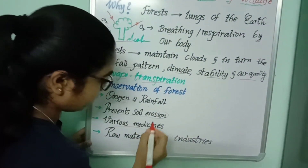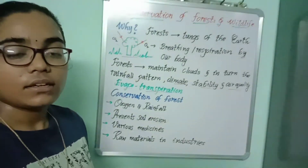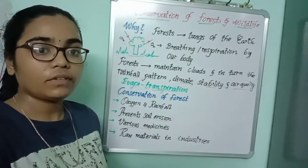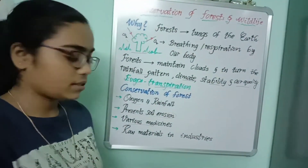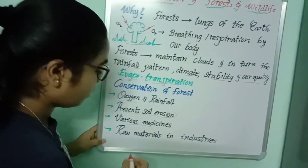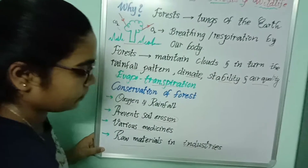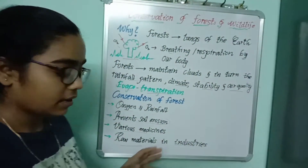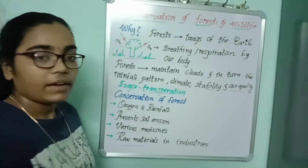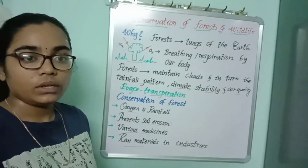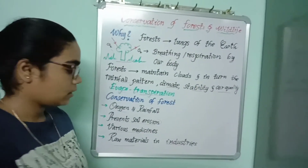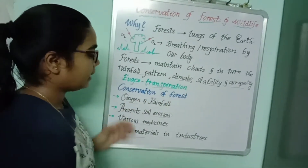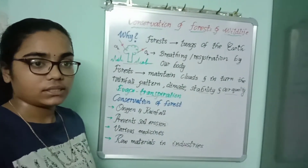Forests also provide various medicines — such as neem, mint, and lemon — which are helpful for preparing medicines. Additionally, forests provide raw materials for industries. The main required materials for industries are raw materials, for example wood and rubber. These raw materials can be obtained from the forest. That is why we have to conserve forests.